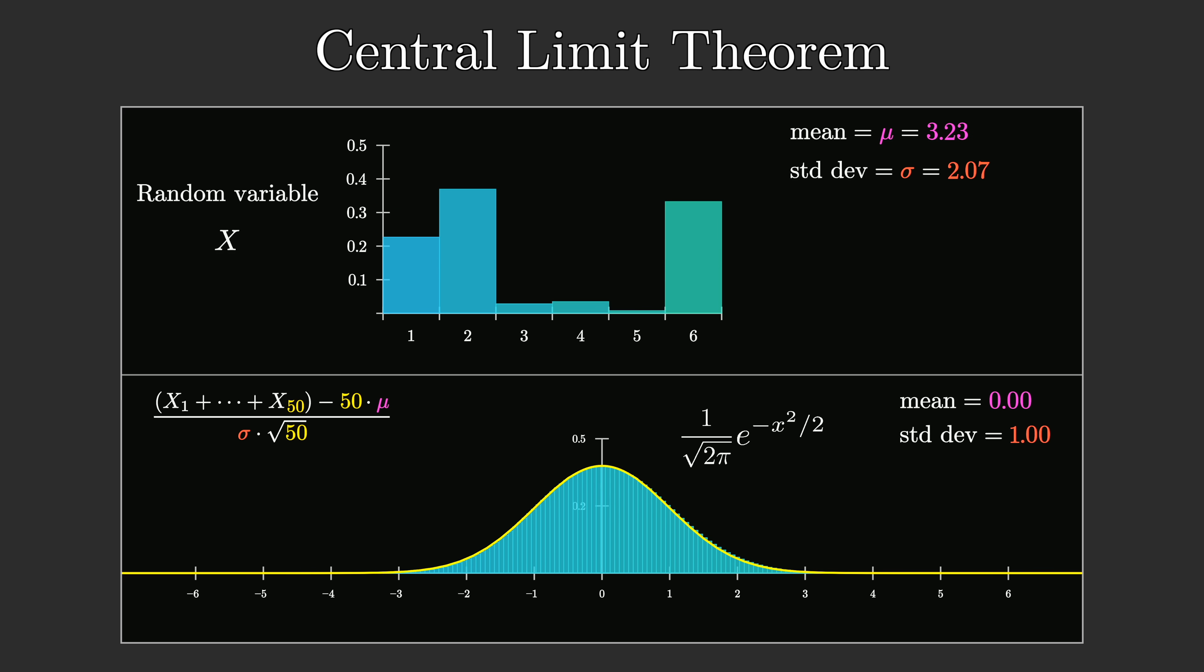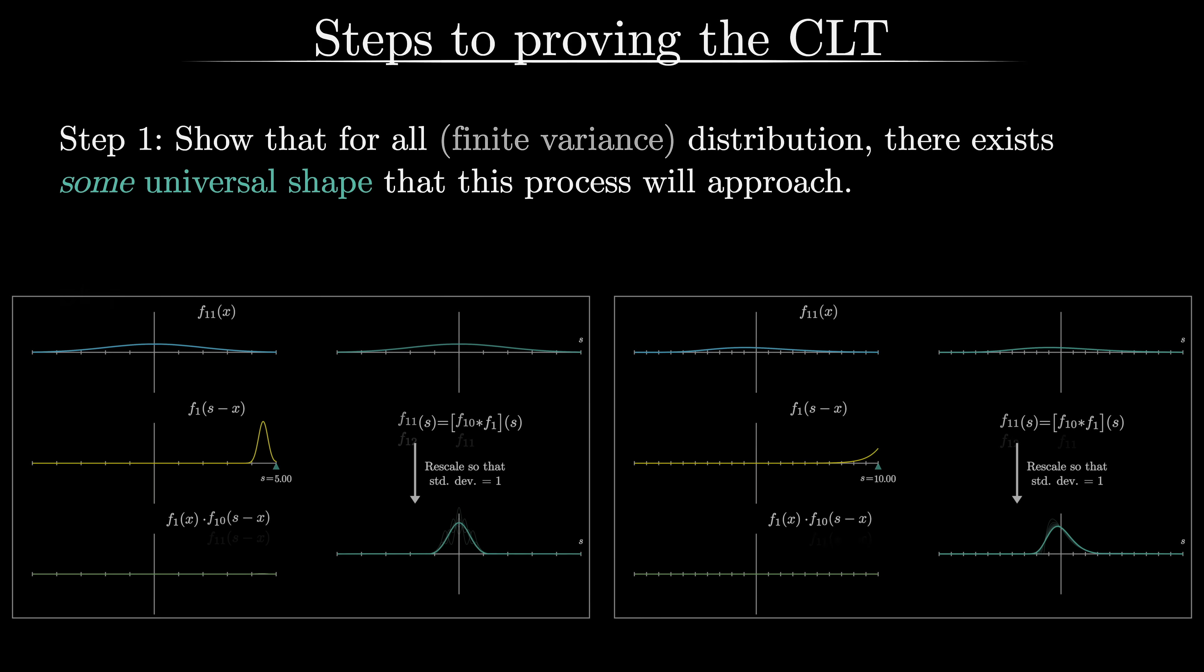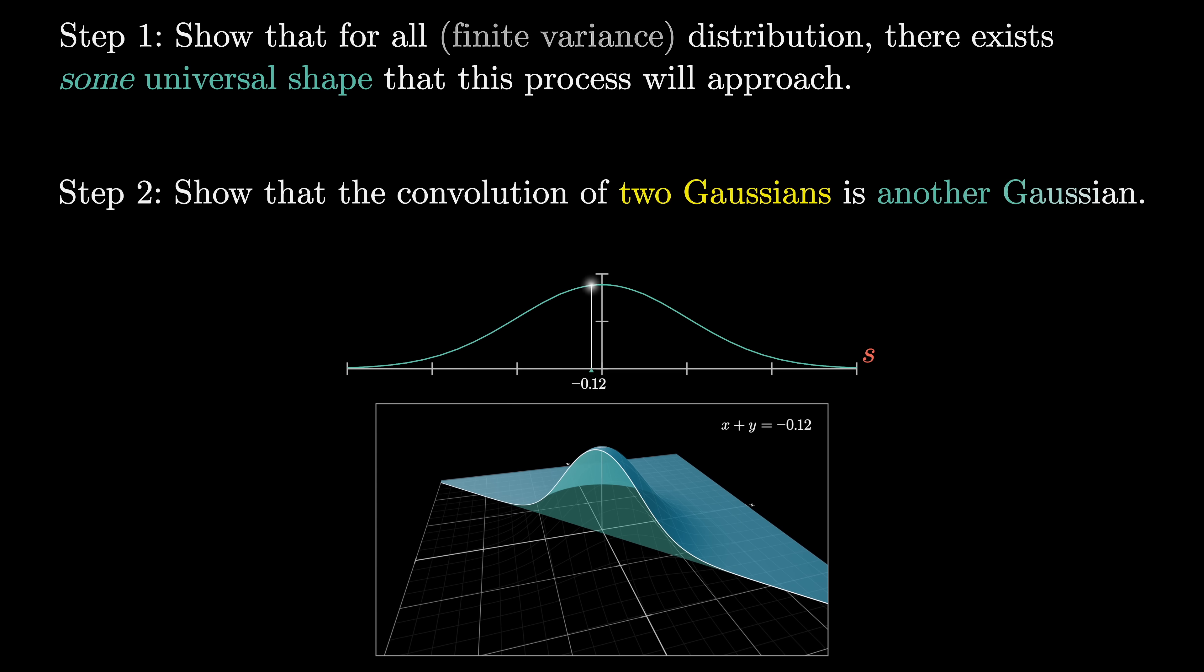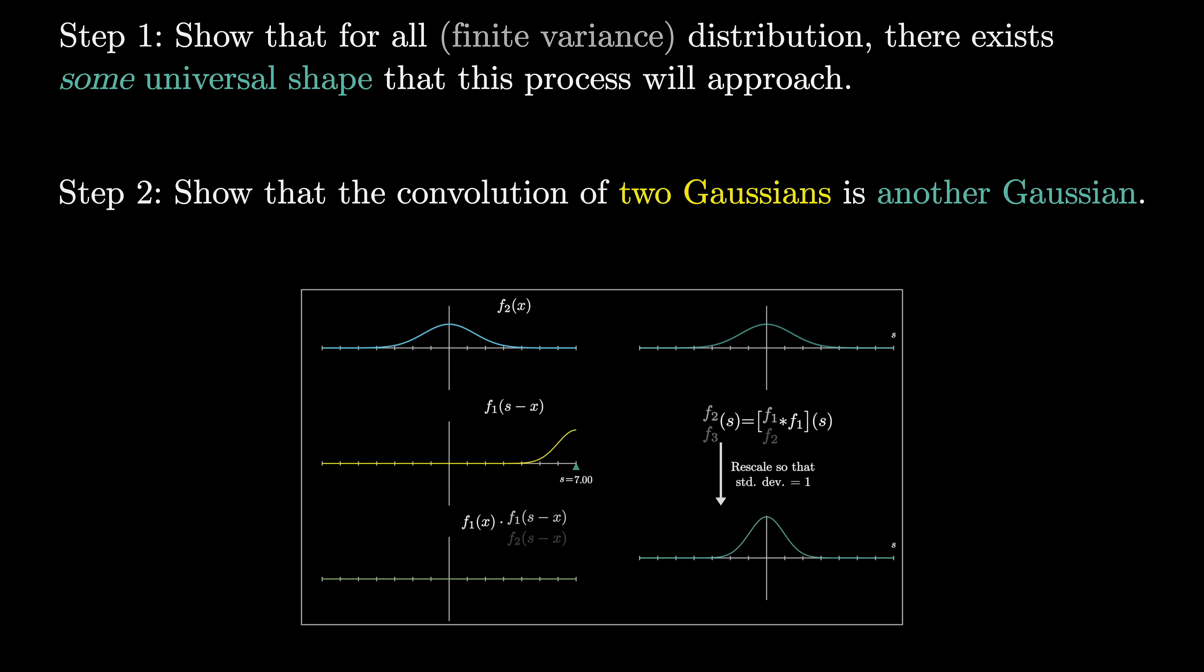One common approach to proving this theorem involves two separate steps. The first step is to show that for all the different finite variance distributions you might start with, there exists a single universal shape that this process of repeated convolutions tends towards. This step is actually pretty technical, it goes a little beyond what I want to talk about here. You often use these objects called moment generating functions that gives you a very abstract argument that there must be some universal shape, but it doesn't make any claim about what that particular shape is, just that everything in this big family is tending towards a single point in the space of distributions. So then step number two is what we just showed in this video, prove that the convolution of two Gaussians gives another Gaussian. What that means is that as you apply this process of repeated convolutions, a Gaussian doesn't change, it's a fixed point. So the only thing it can approach is itself, and since it's one member in this big family of distributions, all of which must be tending towards a single universal shape, it must be that universal shape.